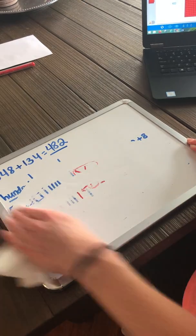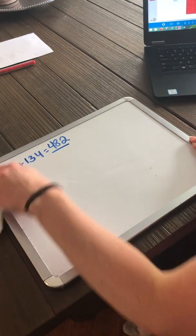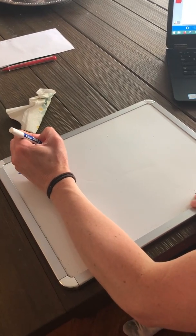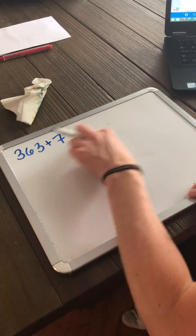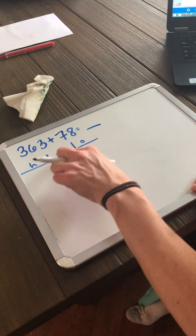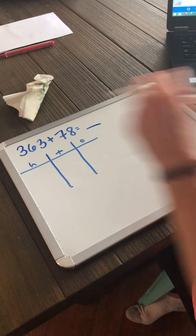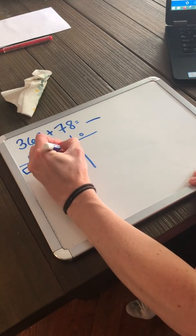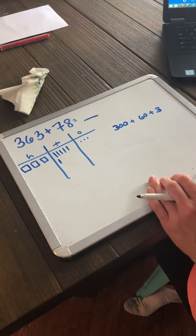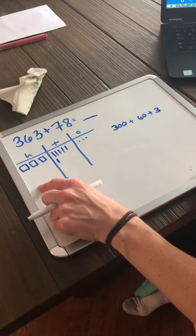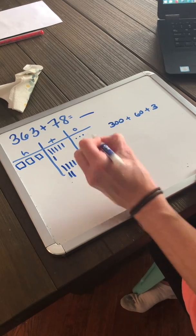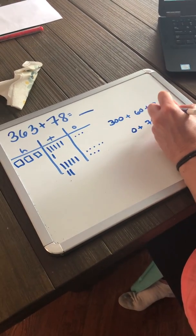Let's do one more problem. Let's do the problem 363 plus 78. I'm going to set my place value chart up. I'm going to just go ahead and abbreviate O, T, and H for 1s, 10s, and 100s. And now I'm going to show 363. Now I'll do 78. I have no 100s. So there's no 100s there. But I have 7 10s. And I have 8 1s. So no 100s, 7 10s, and 8 1s.